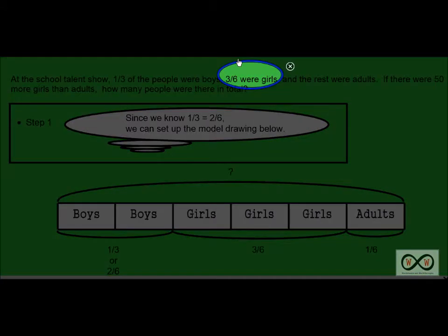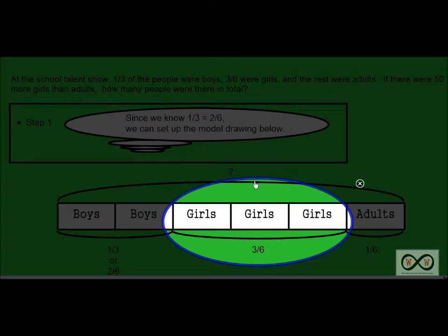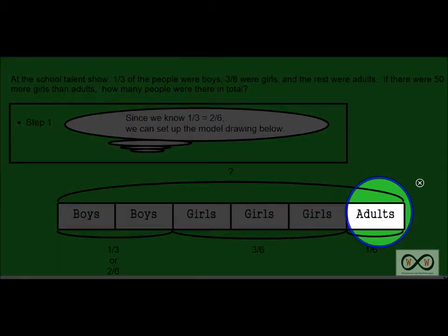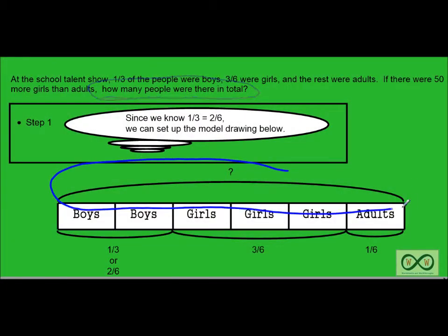Then we also know that three-sixths were girls, shown in the model. And the rest were adults. For the whole audience it would be one whole, so we have six parts. With two-sixths for boys and three-sixths for girls, that gives us five-sixths altogether, so the adults would be one-sixth of the audience. Two-sixths plus three-sixths plus one-sixth equals one whole. Our math job is to find how many people were in the whole audience.